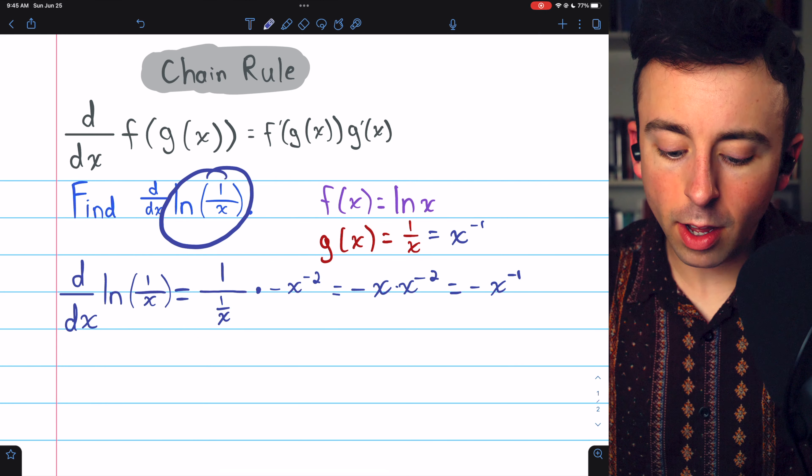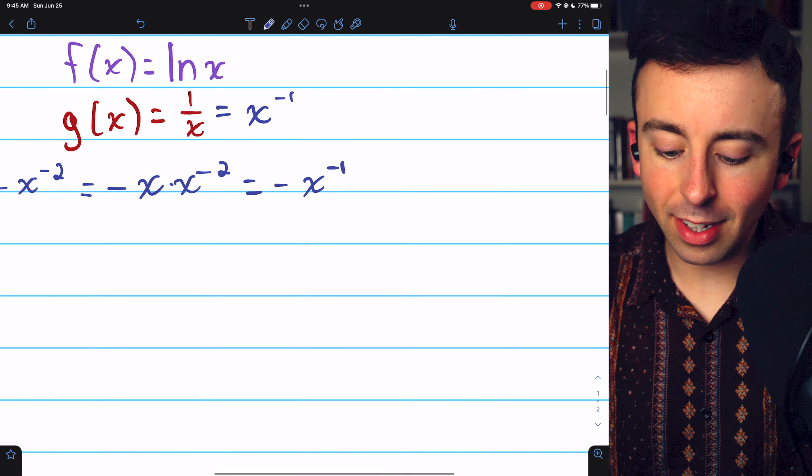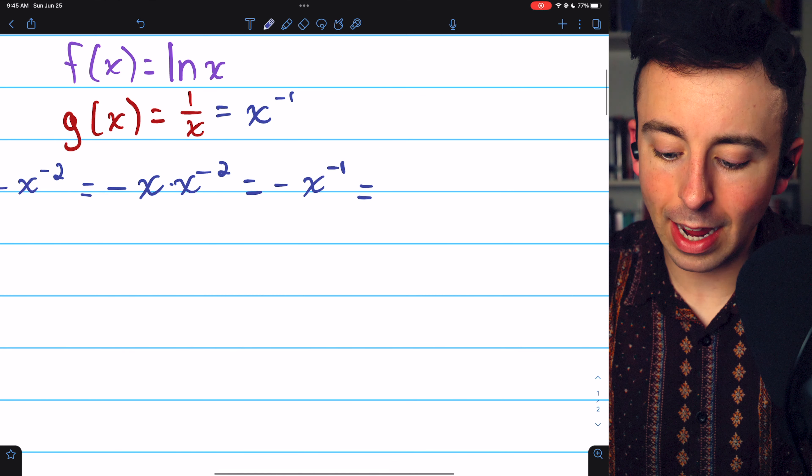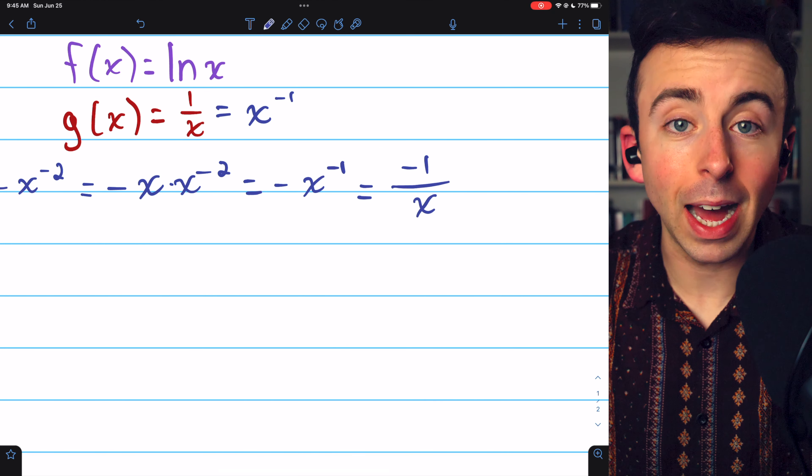Thus, the derivative of the natural log of 1 over x is negative x to the negative 1, which we could also write as negative 1 divided by x.